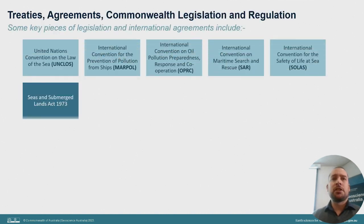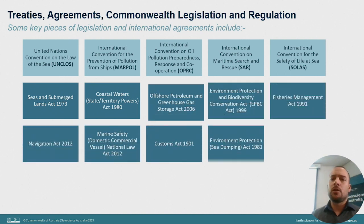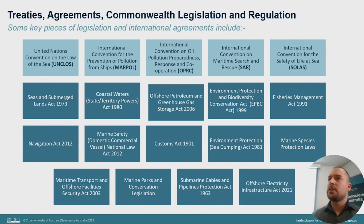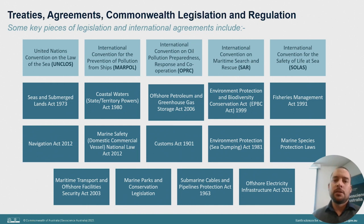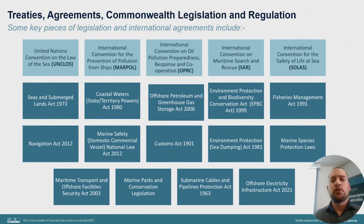Some of the key pieces of legislation and international agreements include UNCLOS, which establishes the legal framework for Australia's maritime jurisdiction; domestic legislation including the Seas and Submerged Lands Act, which defines Australia's territorial sea, exclusive economic zone and continental shelf boundaries; the Offshore Petroleum and Greenhouse Gas Storage Act, which regulates offshore petroleum exploration; the Environmental Protection and Biodiversity Conservation Act, which provides a legal framework to protect and manage important flora, fauna, ecological communities and heritage places; and the Offshore Electricity Infrastructure Act, which enables the establishment of offshore renewable electricity projects in Commonwealth waters.